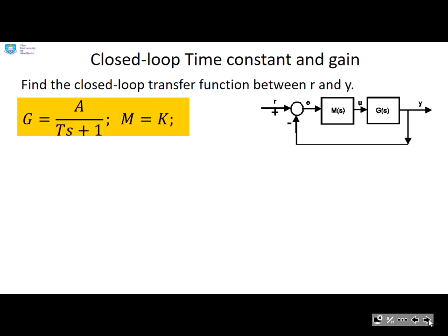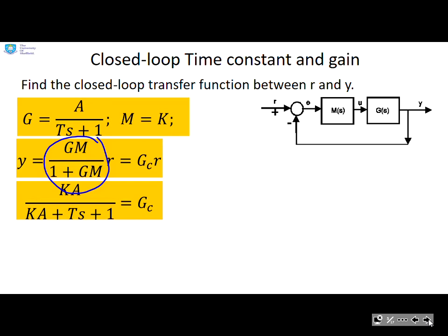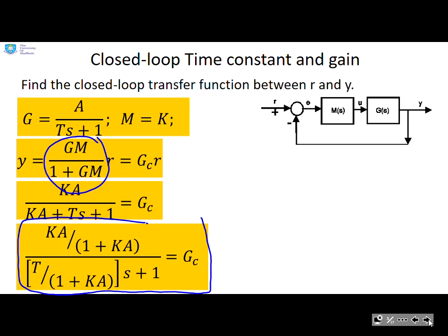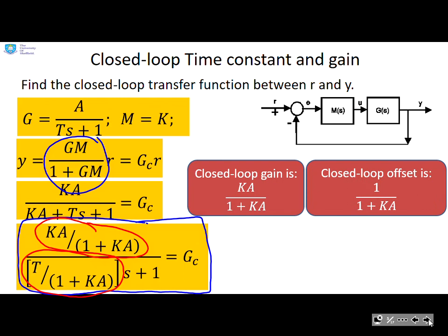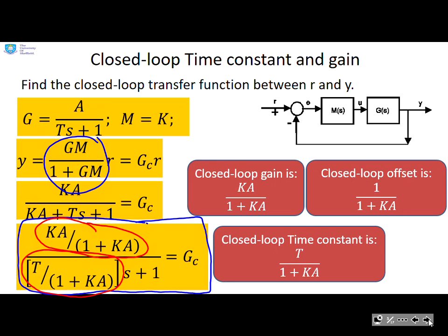Let's look at an example of a first-order system. What's the closed-loop time constant, gain, and offset? If we work out our formula, Gc = GM/(1 + GM), then plug in the values, putting this in time constant form for convenience. The closed-loop gain is Ka/(1 + Ka), the closed-loop offset is 1/(1 + Ka), and the closed-loop time constant is T/(1 + Ka).